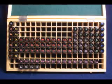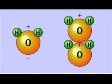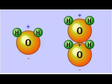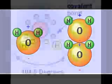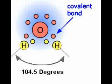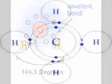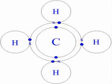A molecule is the smallest particle of a chemical element or compound that has the chemical properties of that element or compound. Molecules are made up of atoms that are held together by chemical bonds. These bonds form as a result of the sharing or exchange of electrons among atoms.